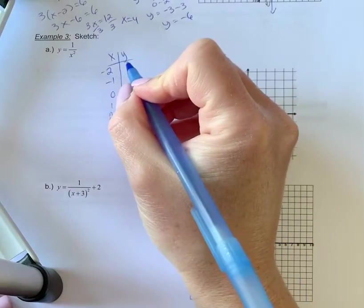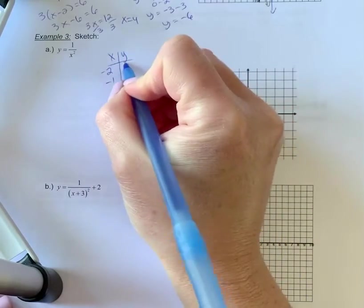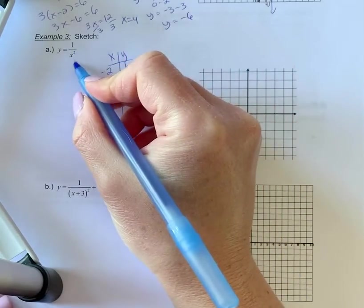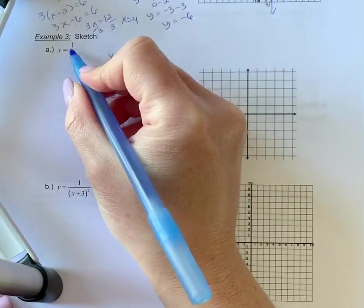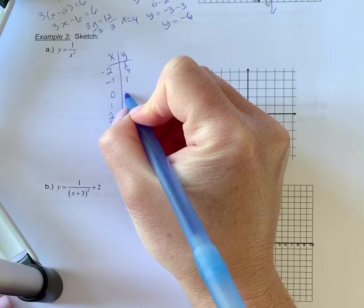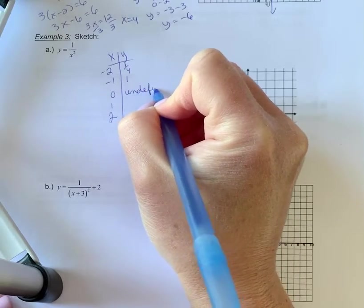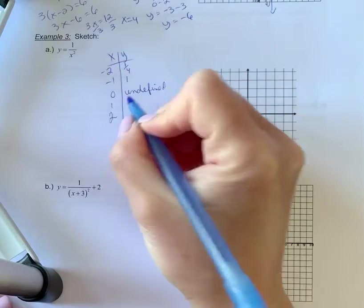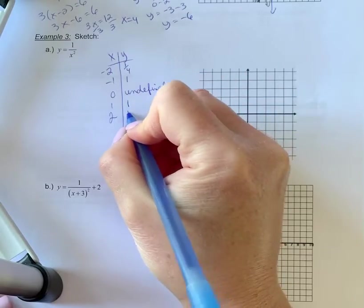So 1 over negative 2 squared is a quarter, 1 over negative 1 squared is 1, 1 over 0 squared is undefined, 1 over 1 squared would be 1, and 1 over 2 squared would be 1 quarter.